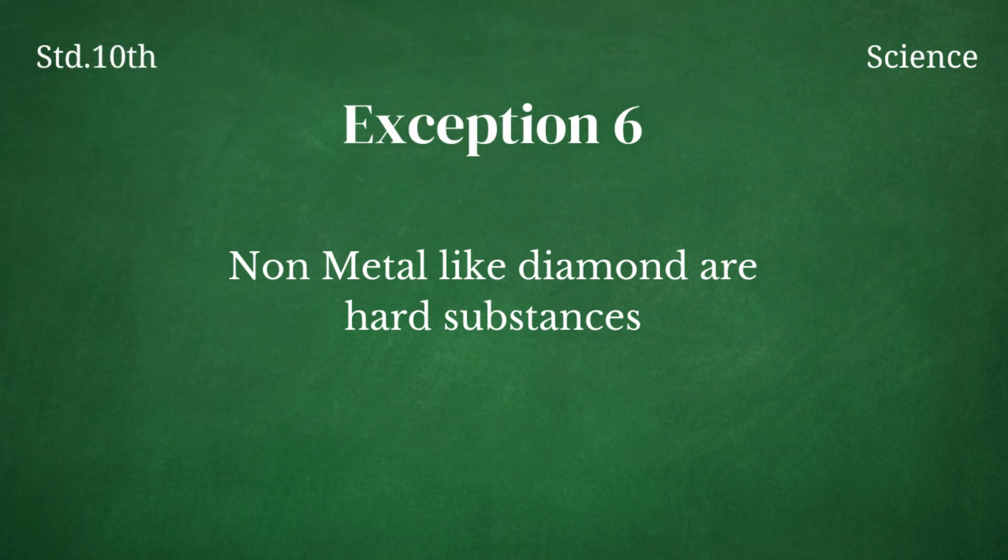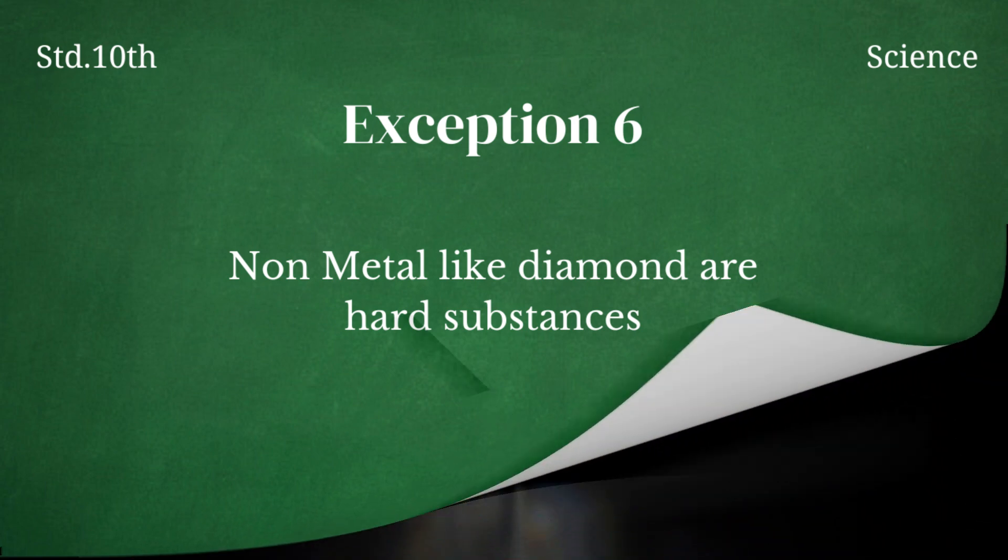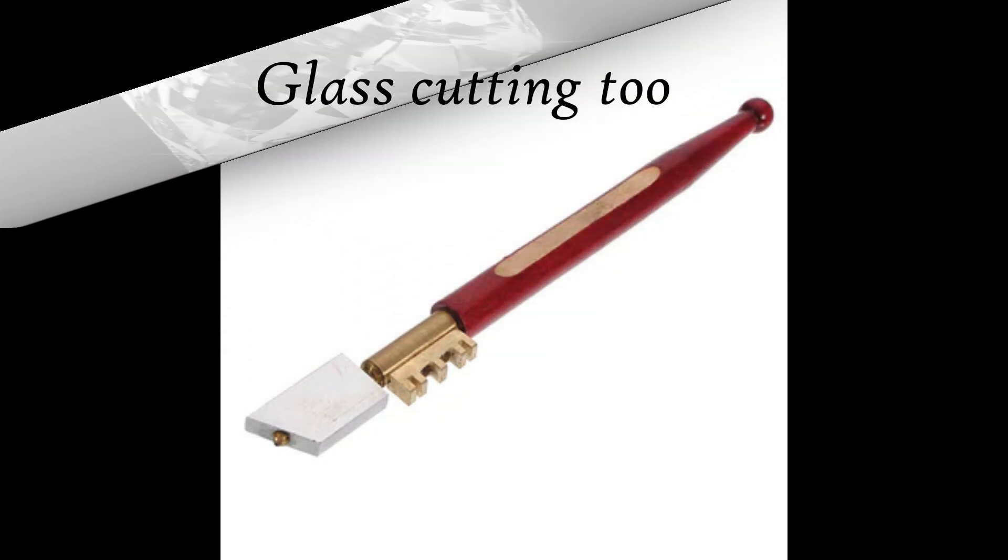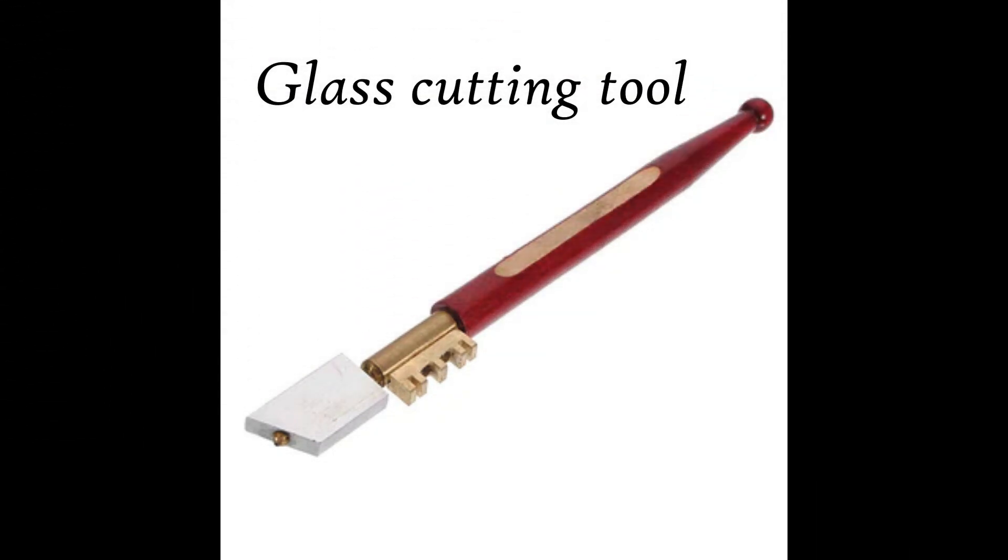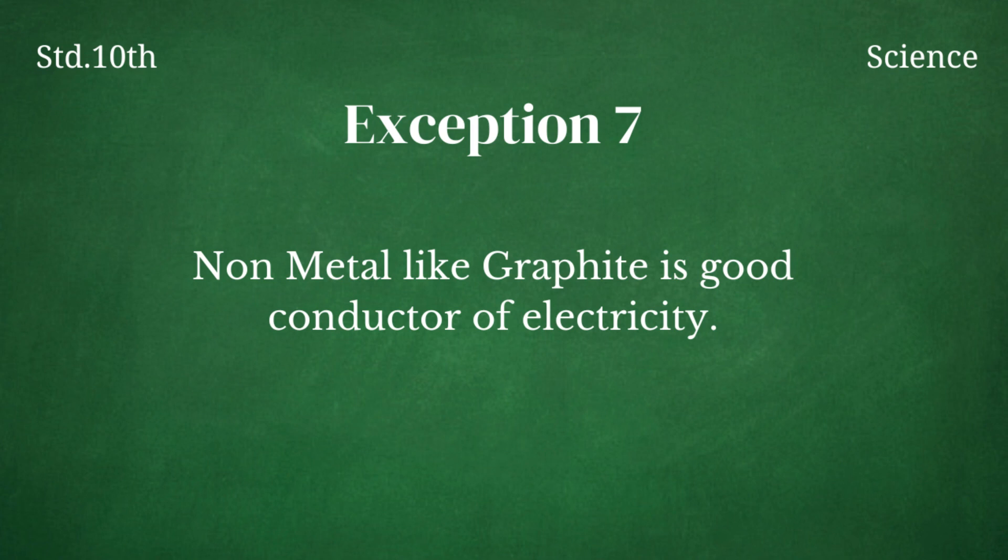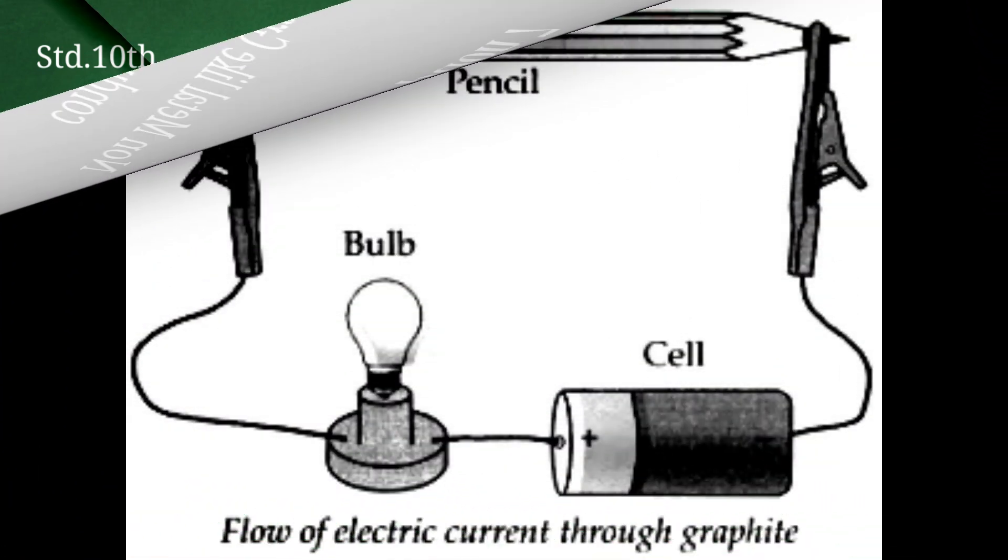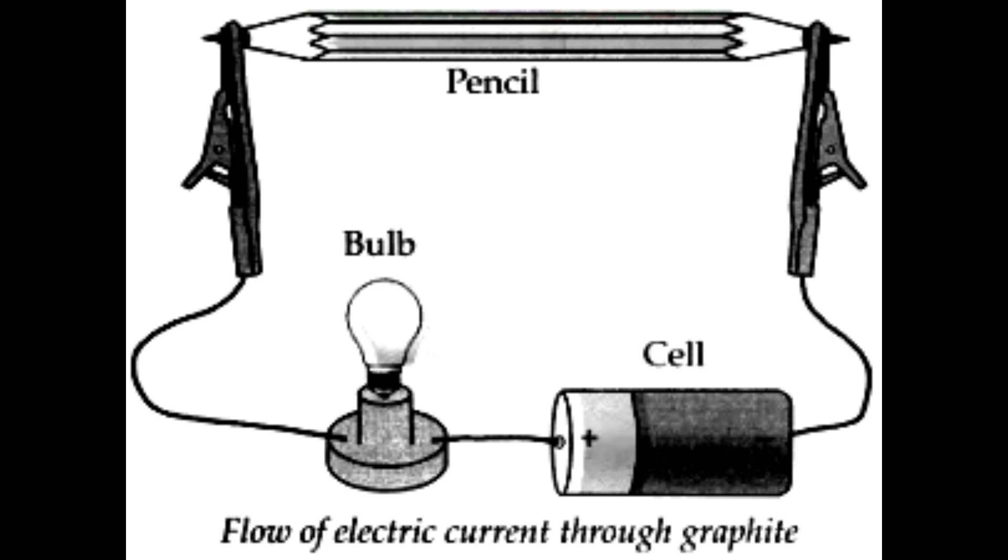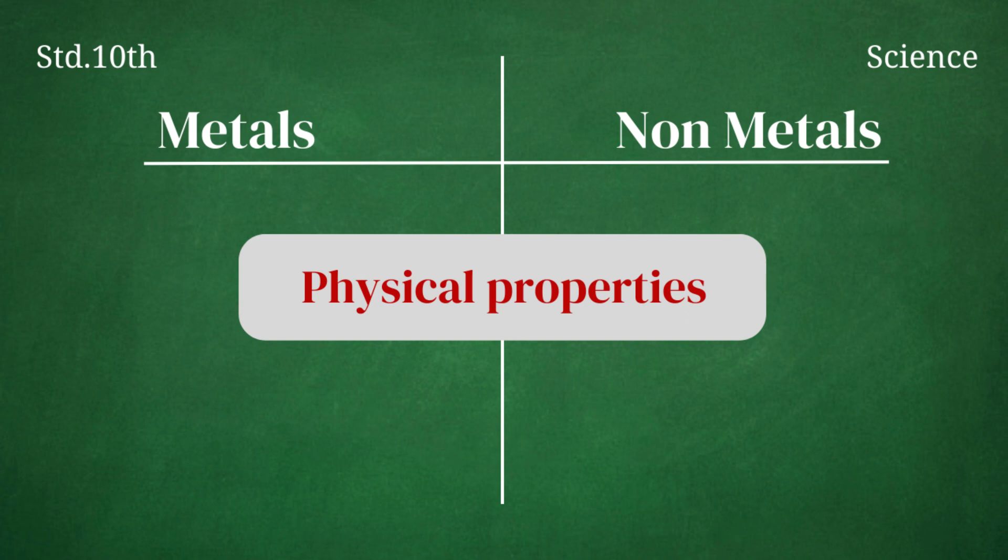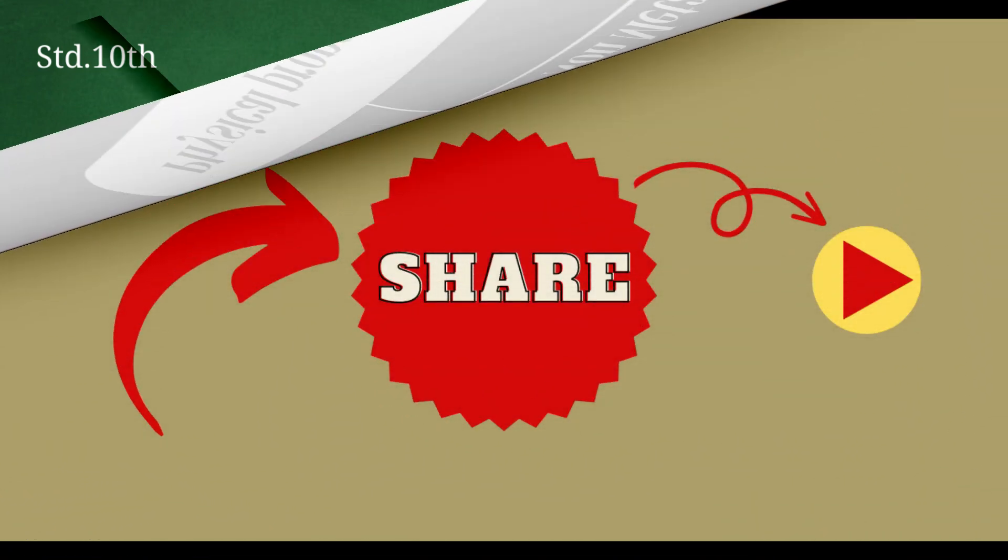Metals are hard while non-metals are soft, but diamond is the non-metal which is hard in nature. Diamond is also used in glass cutting. Non-metals are not good conductor of electricity, but graphite non-metal is good conductor of electricity. So this was all about the difference between metals and non-metals and some interesting exceptional cases.